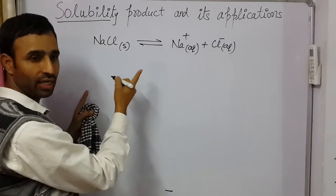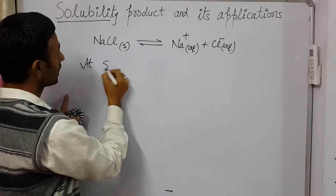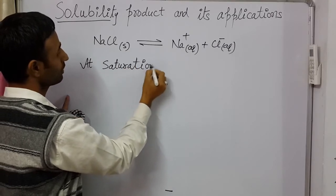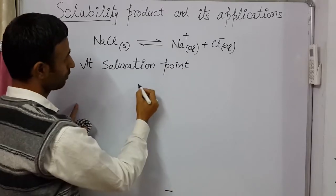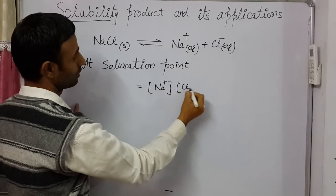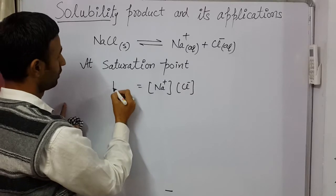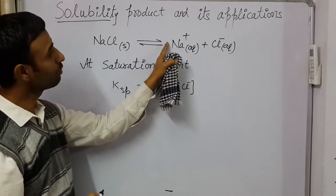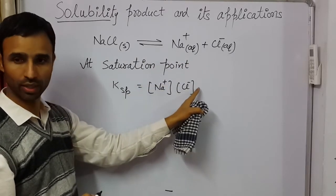Now, at that saturation point, the product of the concentration of ions is called the solubility product. In this case, the number of ions is 1 and 1, so the power is 1.